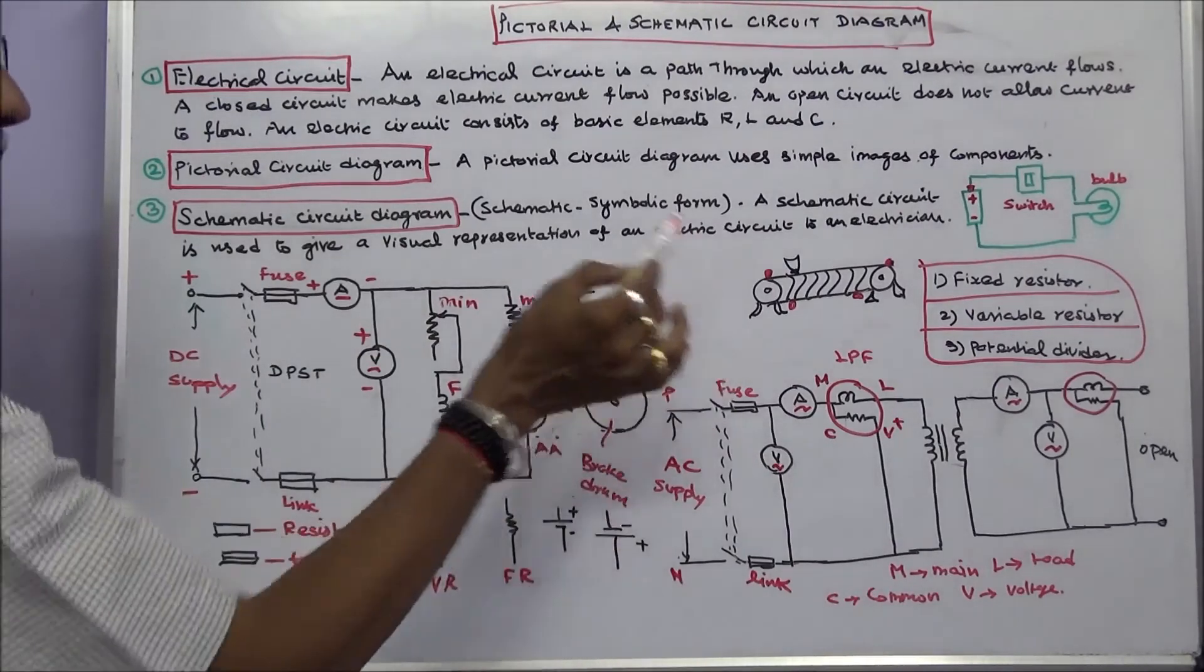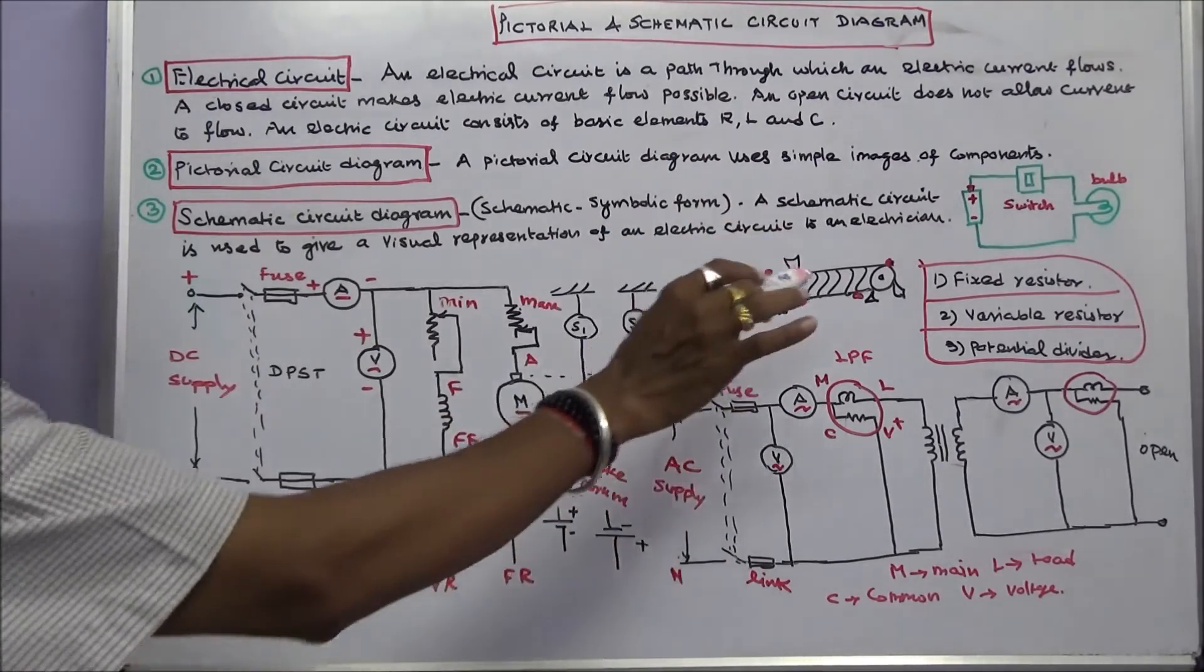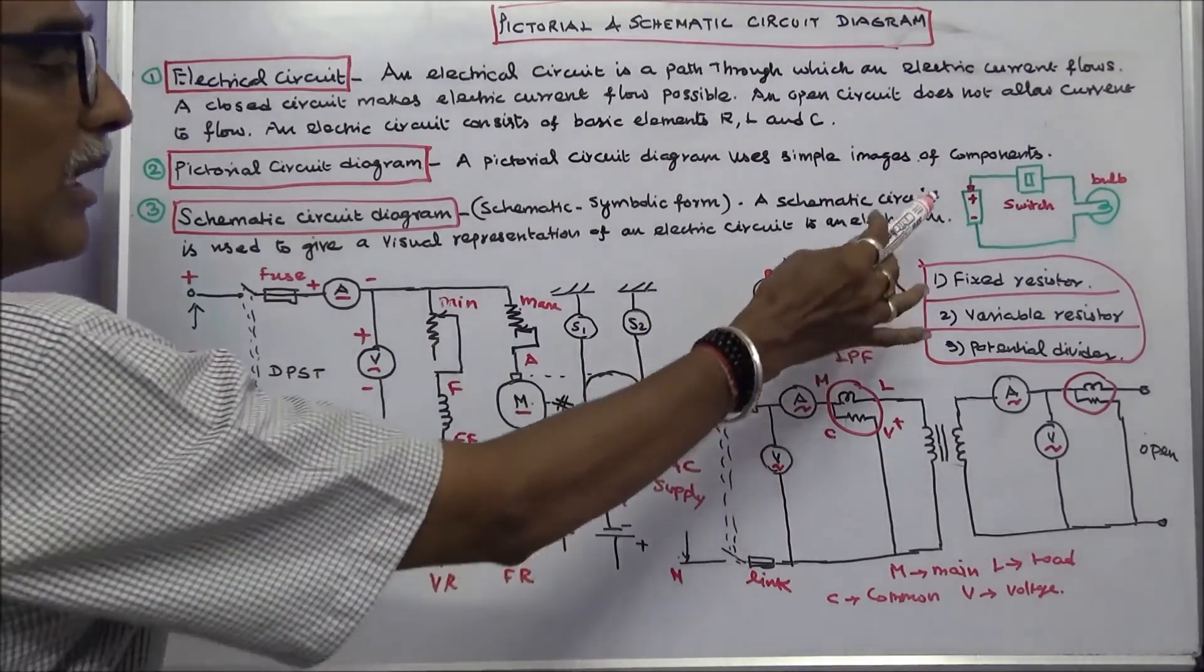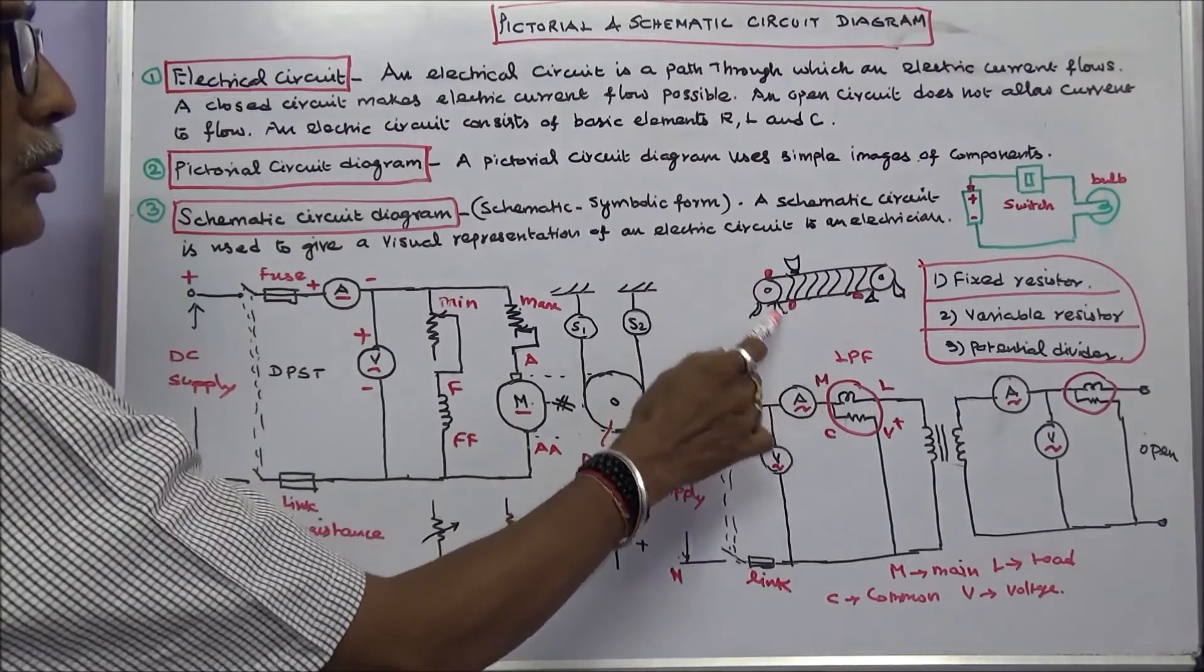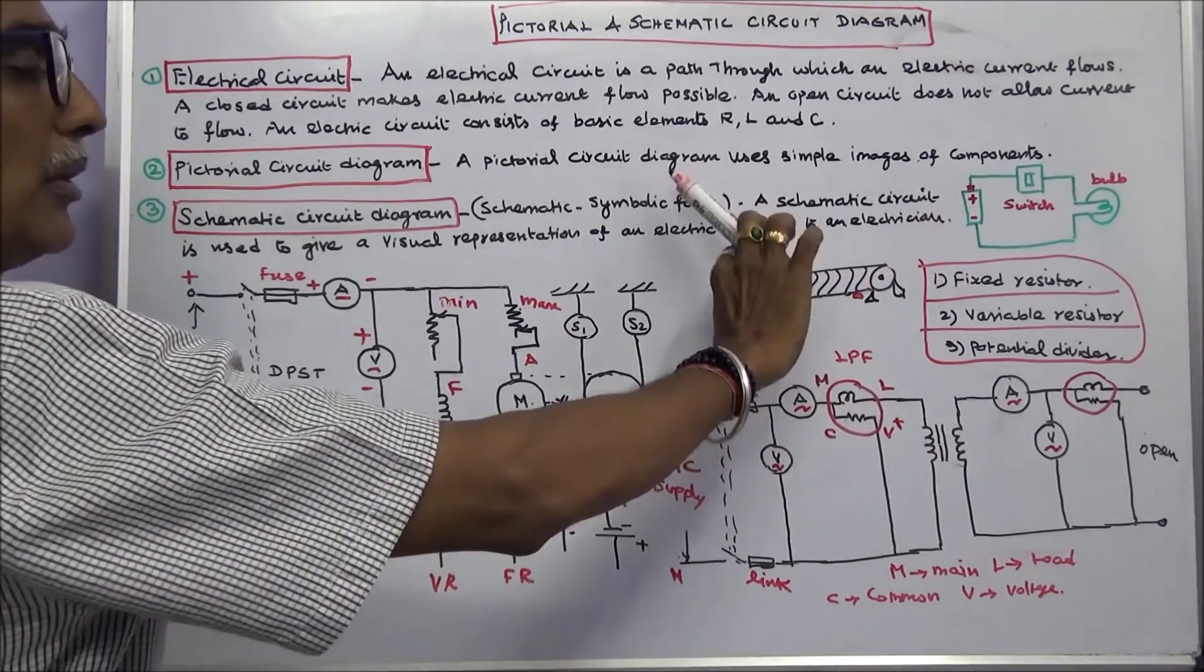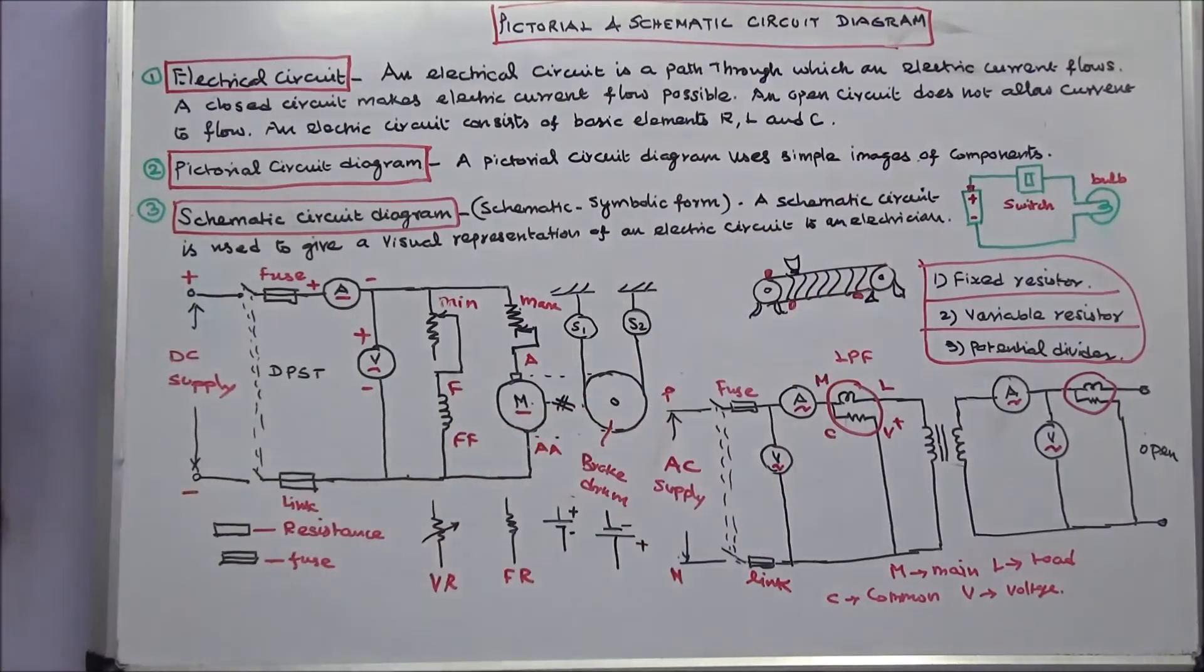This is a rheostat. A rheostat can be used in three ways. One is a fixed resistor, another is a variable resistor, third is a potential divider. A rheostat consists of three terminals: one, two, three. If you use these two terminals, fixed resistor. If you use these two terminals, variable resistor. If you use three terminals, it will become a potential divider.